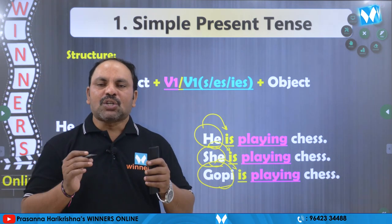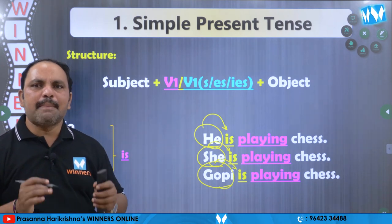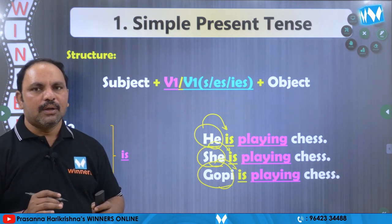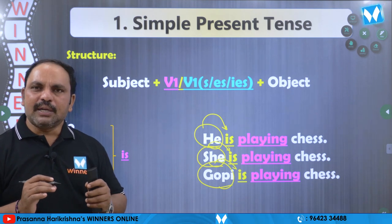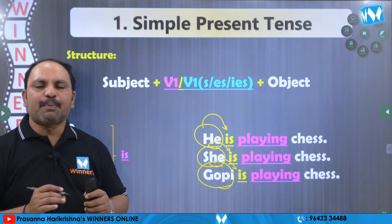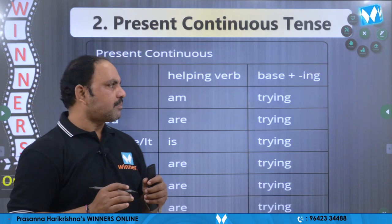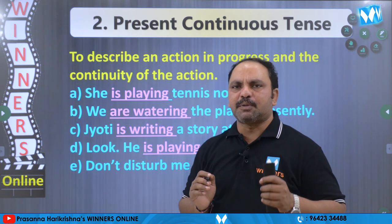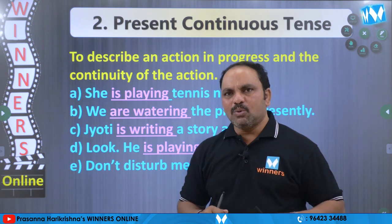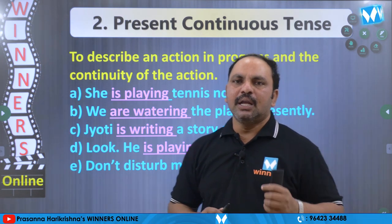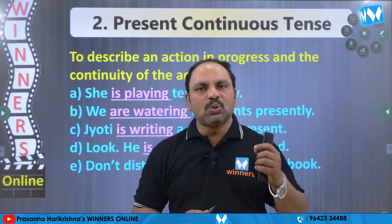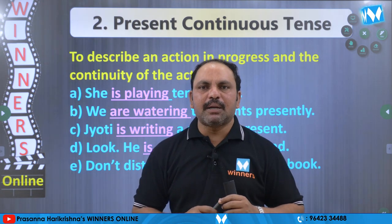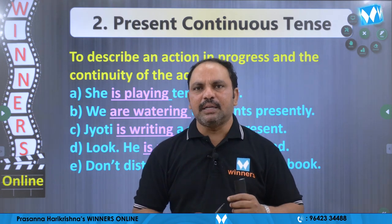This is the structure and verb form used in the present continuous tense. Present continuous tense lo vaadhu one tete structure idhi. Now let us look at the use. Rendavadhi, dhan ni e sandarbabal lo upayogisthamu. To describe an action in progress at present — present ante prastutamu, continuous ante konasaguthu undedhi. So, to describe an action that is going on at present.